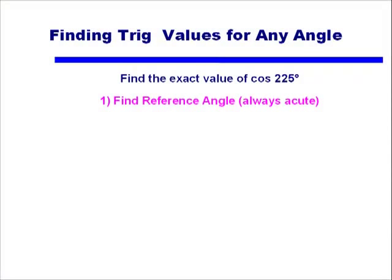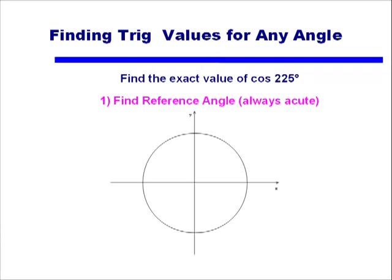Let's take the example of cosine of 225 degrees. We need to find the reference angle — that acute angle we can use. We'll use our x-y axes, remembering that the positive x-axis is 0°, the positive y-axis is 90°, the negative x-axis is 180°, and the negative y-axis is 270°. Since 225° falls between 180° and 270°, it's in the third quadrant. To find the reference angle, we take 225° minus 180°, which gives us 45° — one of our three special angles.